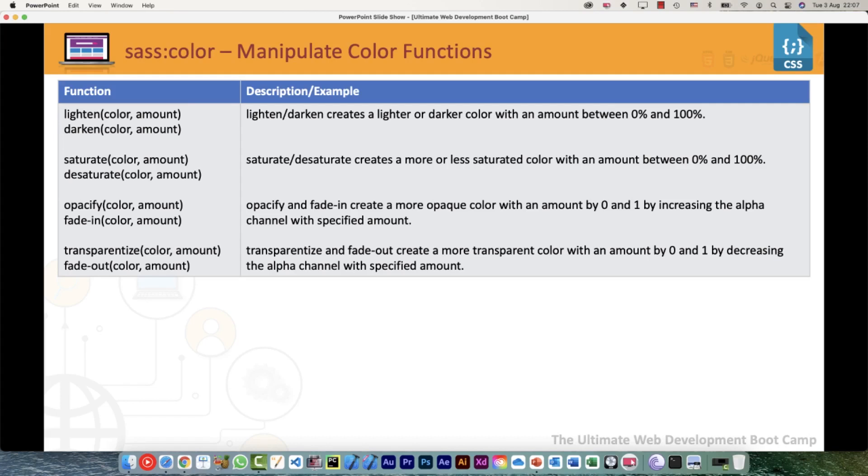Opacify or fade-in: it would create a more opaque color with an amount between 0 and 1 by increasing the alpha channel with whatever amount we specify. Then transparentize or fade-out: that would be the opposite of opacify or fade-in. It would create a more transparent color with an amount between 0 and 1, and it would decrease basically the alpha channel by the specified amount.